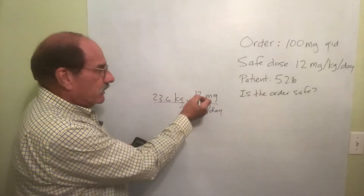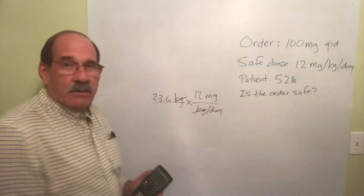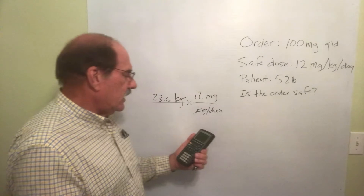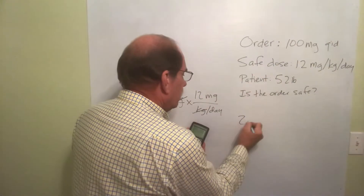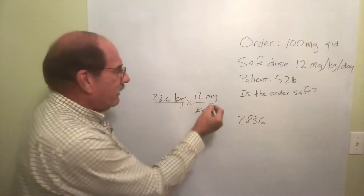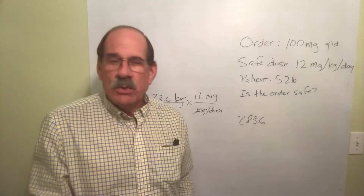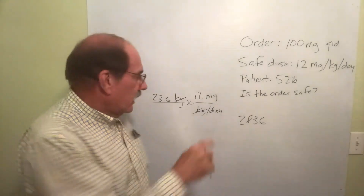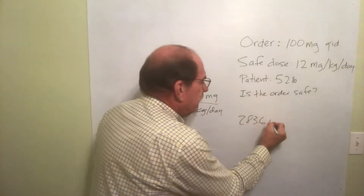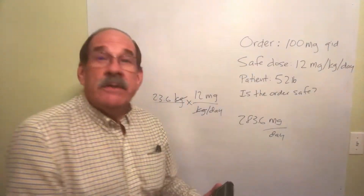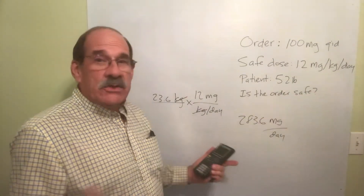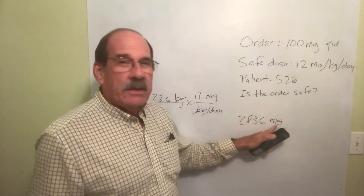Therefore, multiply that number by 12, and when we cancel out the kilograms — take that number times 12 — that's 283 point something. So that's approximately 283 milligrams per day. Make sure you keep track at every step of which units you're dealing with. That is how many milligrams per day this 52-pound patient can safely receive for the whole day.